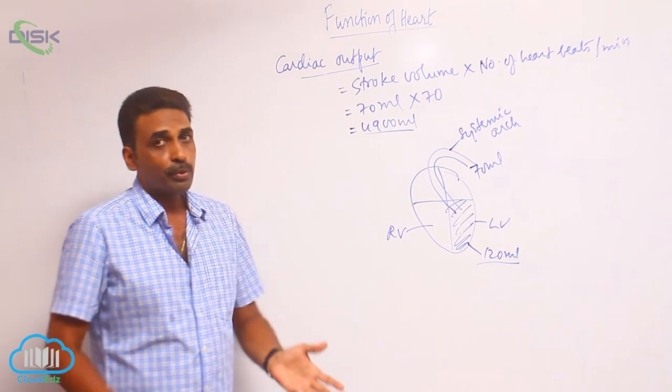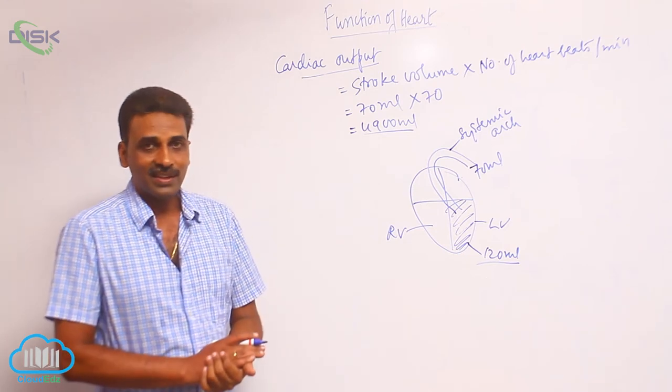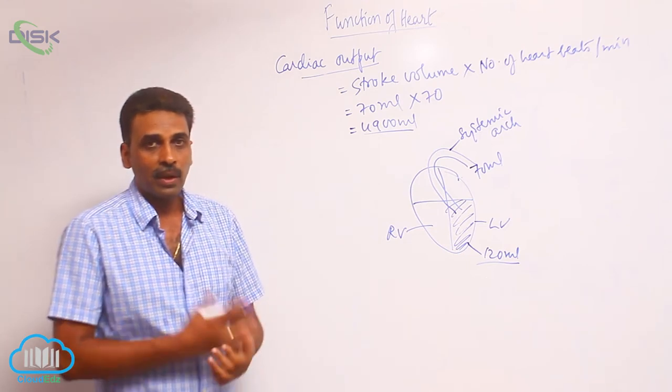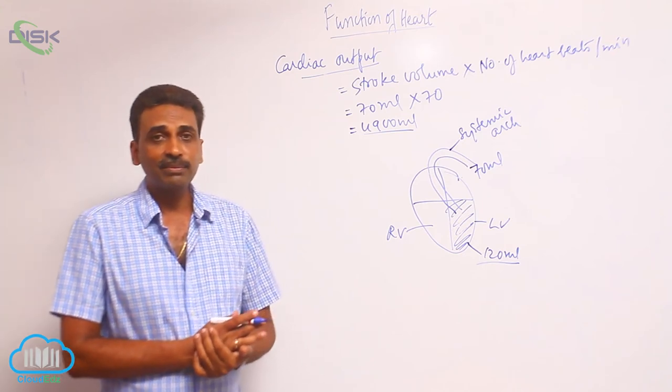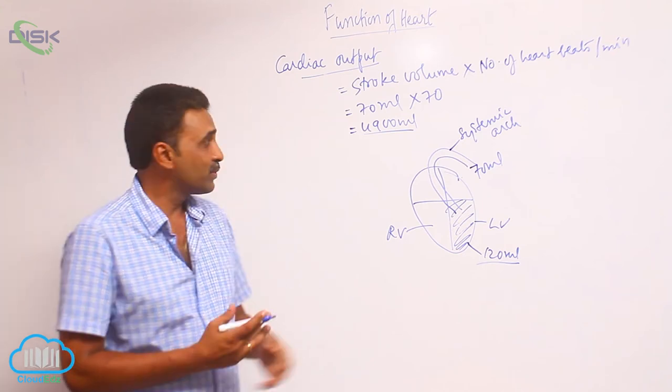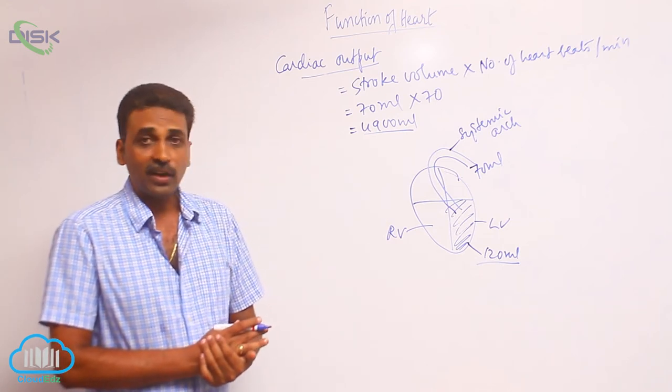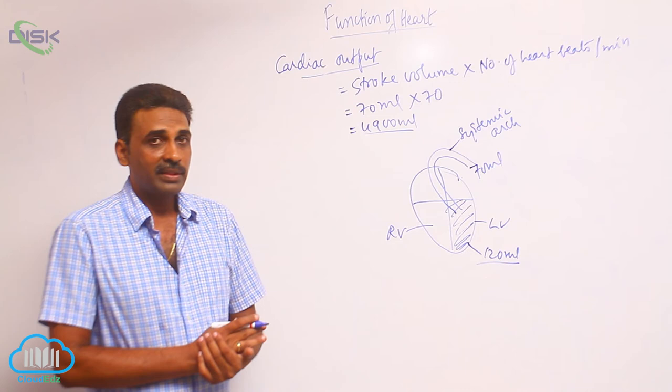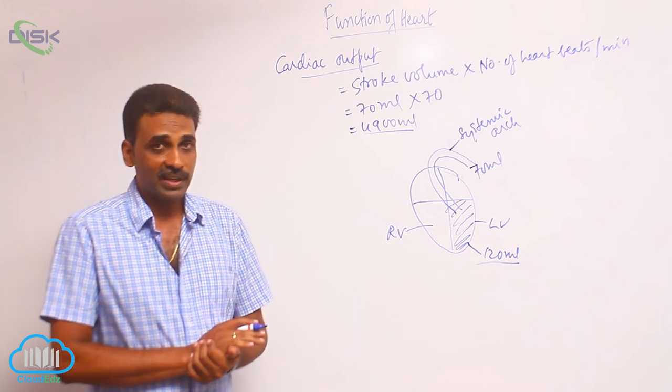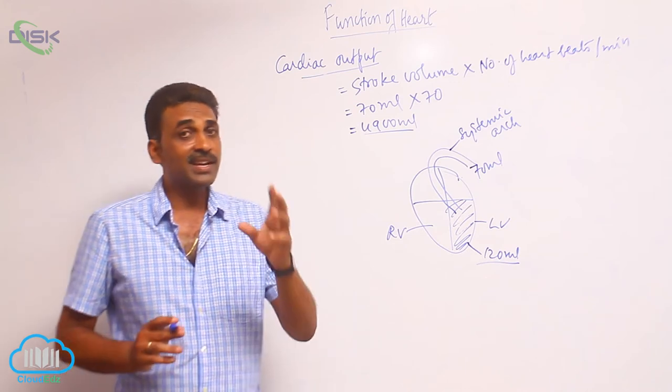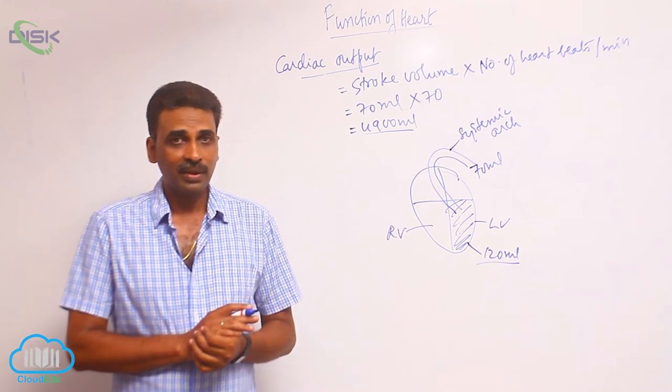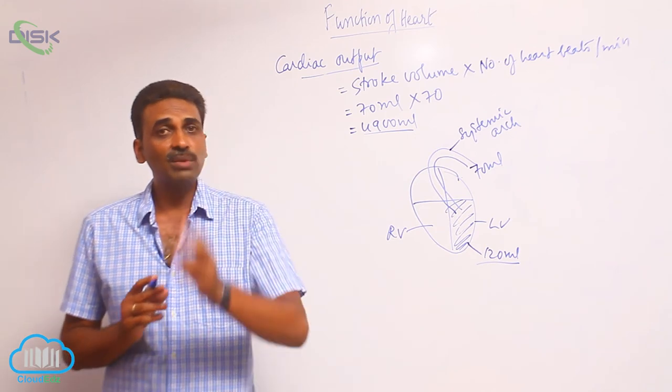The cardiac output can increase or decrease. There is autonomic nervous system and hormones which influence cardiac output. The autonomic nervous system has sympathetic and parasympathetic nerves. In emergency condition, sympathetic nerves are stimulated.